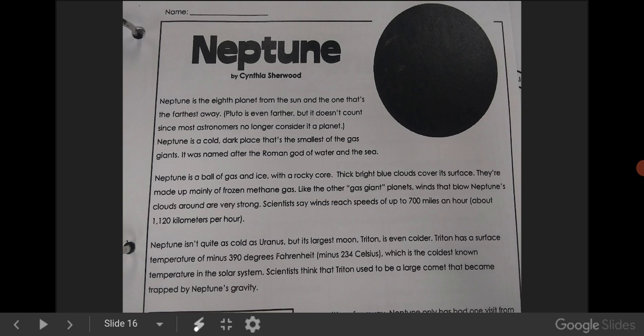Neptune is a ball of gas and ice with a rocky core. Thick, bright blue clouds cover the surface. They're made up mainly of frozen methane gas. Like the other gas giant planets, winds that blow Neptune's clouds around are very strong. Scientists say winds reach speeds of up to 700 miles an hour.